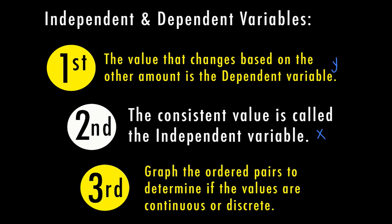We were also able to graph ordered pairs to determine if the values were continuous or discrete. Continuous means the action is happening continuously. Discrete means we're paying in increments — whatever's happening occurs by increments. Another example of a discrete graph would be buying something for each person: you can't buy something for half a person, so the graph has separate dots rather than a connected line.